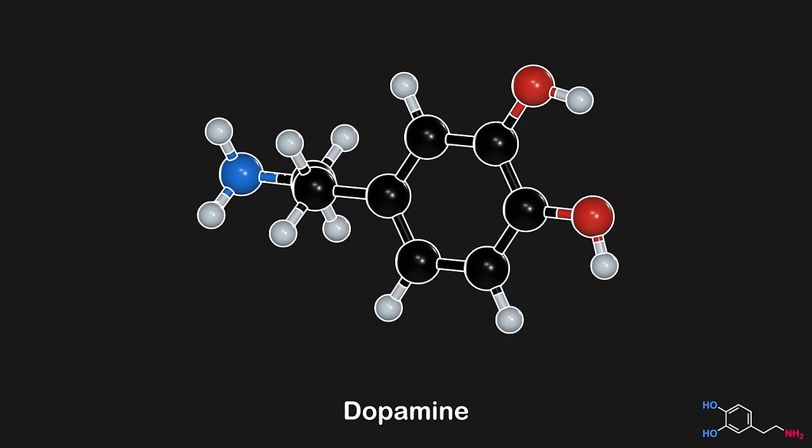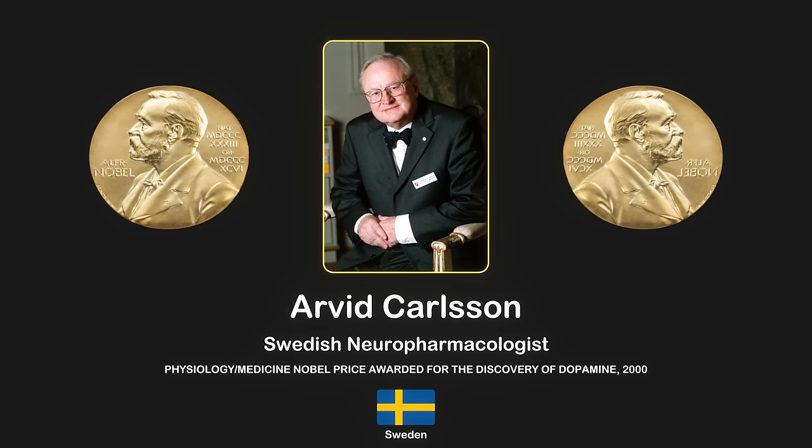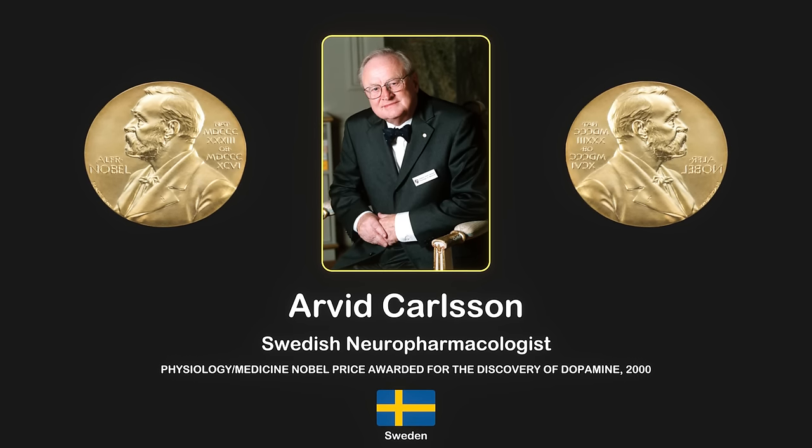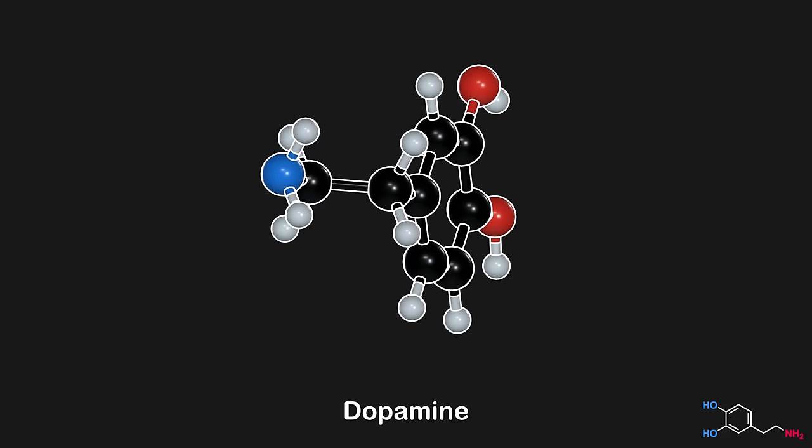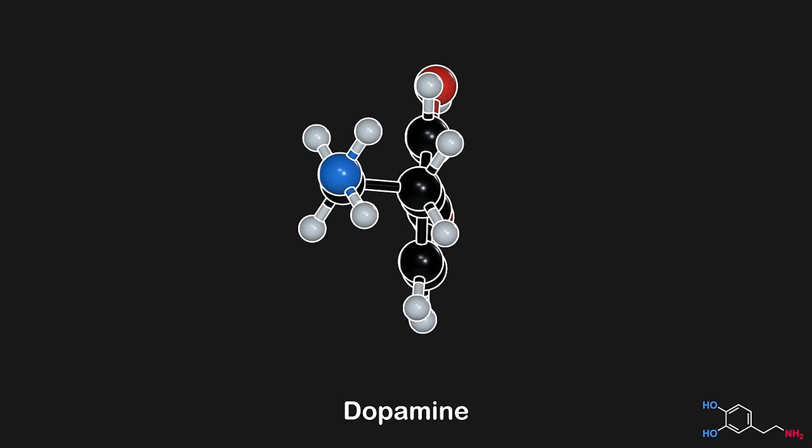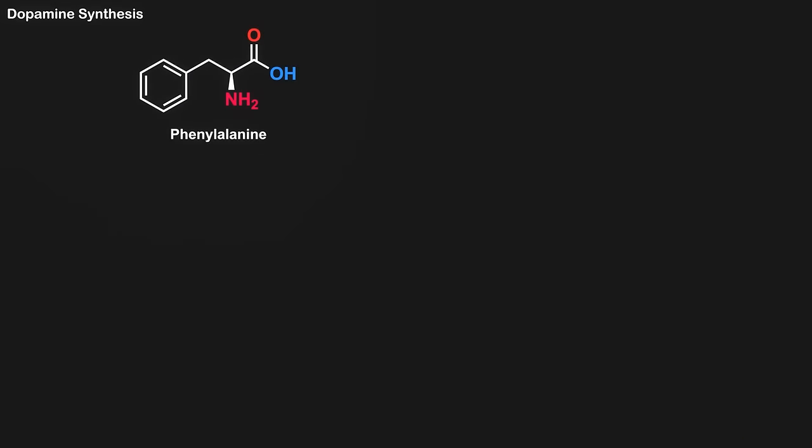The discovery of dopamine can be traced back to the 1950s, when it was discovered by a Swedish scientist, Arvid Carlsson. His work on dopamine led to him being awarded the Nobel Prize in Physiology or Medicine in the year 2000. If we're going to be talking about dopamine, it might be worth mentioning how it's made. Dopamine is made starting from phenylalanine in the body, which is an essential amino acid. Phenylalanine uses the enzyme phenylalanine hydroxylase, PAH, to make tyrosine.